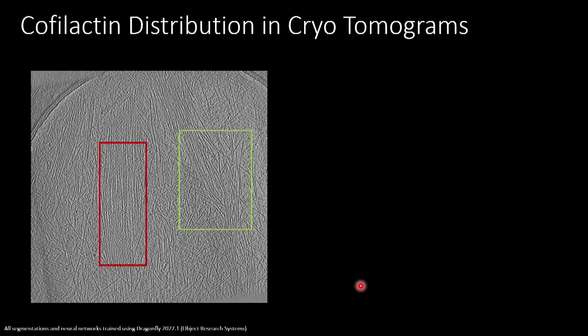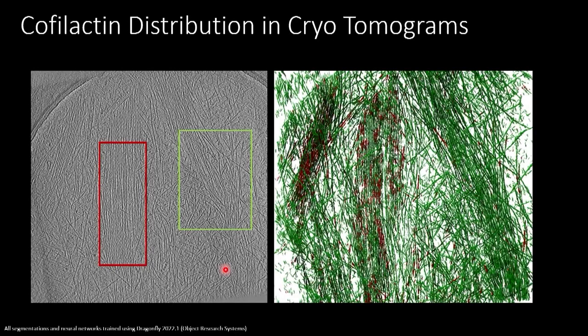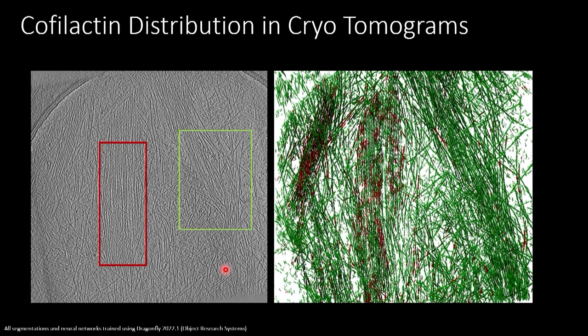Unfortunately, deep learning didn't work out well at first. Because of the nature of cryo-electron tomography, the data is very noisy with no real way to improve the signal, and we have imaging artifacts from the missing wedge — significant anisotropy in Z. Even segmenting just two boxes by hand to differentiate cofilactin from regular actin didn't give me a good training set, and deep learning segmentation to differentiate these filaments didn't have great success.